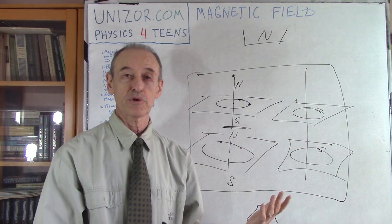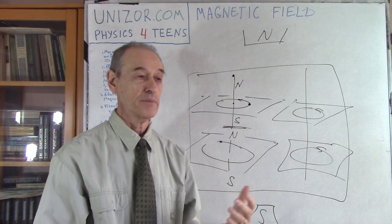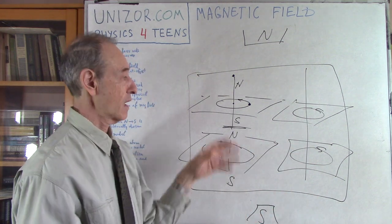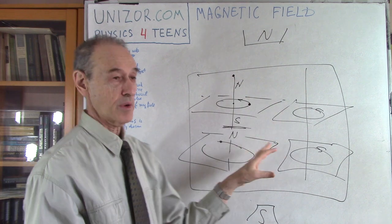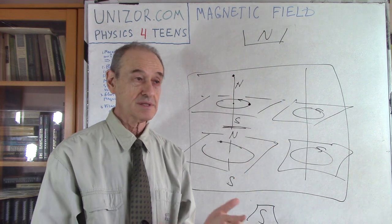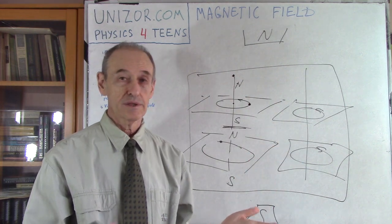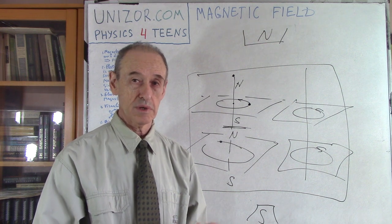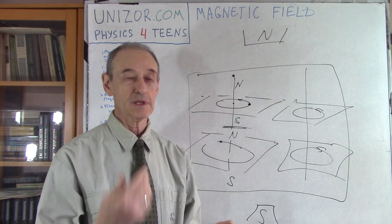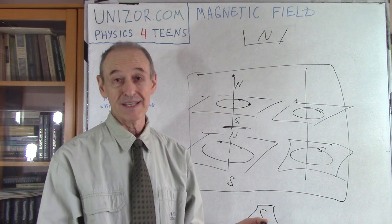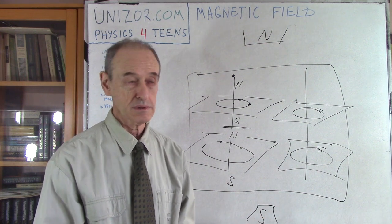And finally, if the atoms are randomly arranged but not flexible — not easy to align — then this is a diamagnetic material, which means it cannot be magnetized, like plastic, for instance.